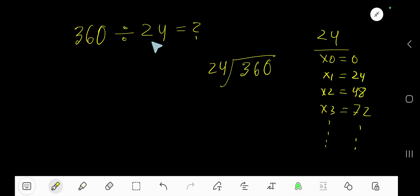360 divided by 24 equals what? Here 24 is the divisor, so we need the multiplication table of 24. 24 times 0 is 0. 24 times 1 is 24 - just add 24 to the previous step: 0 plus 24 equals 24.